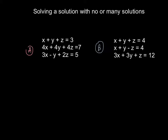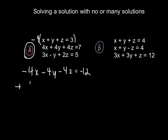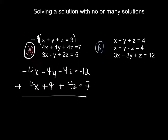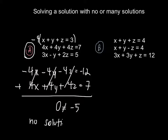We're going to encounter systems with one solution, no solution, or many solutions. For problem a, we multiply the first equation by negative 4 and add it to the second. We get negative 4x minus 4y minus 4z equals negative 12 plus 4x plus 4y plus 4z equals 7. All three variables cancel out, leaving 0 equals negative 5. Since those don't equal each other, we have no solution for this problem.